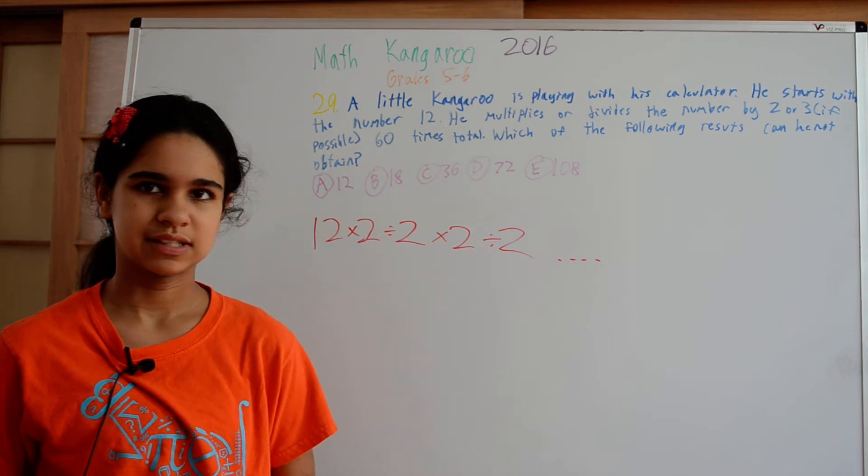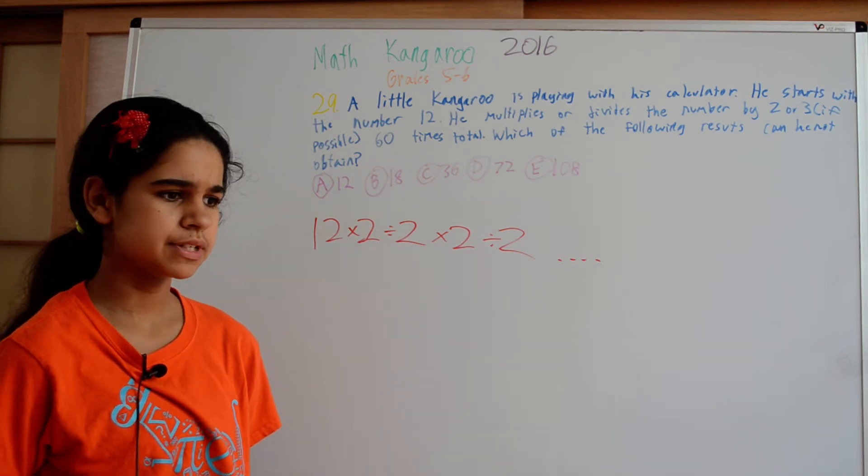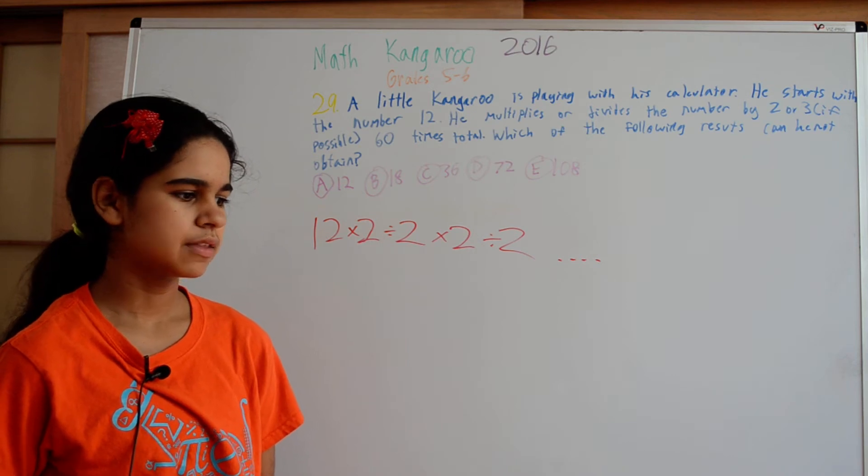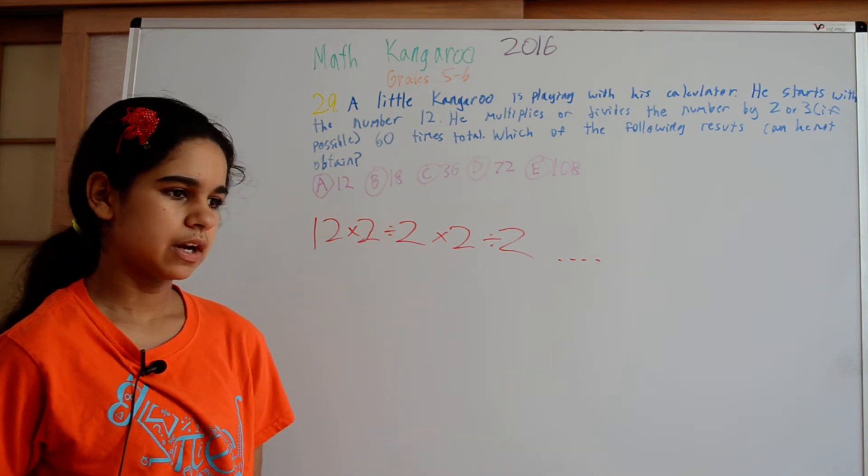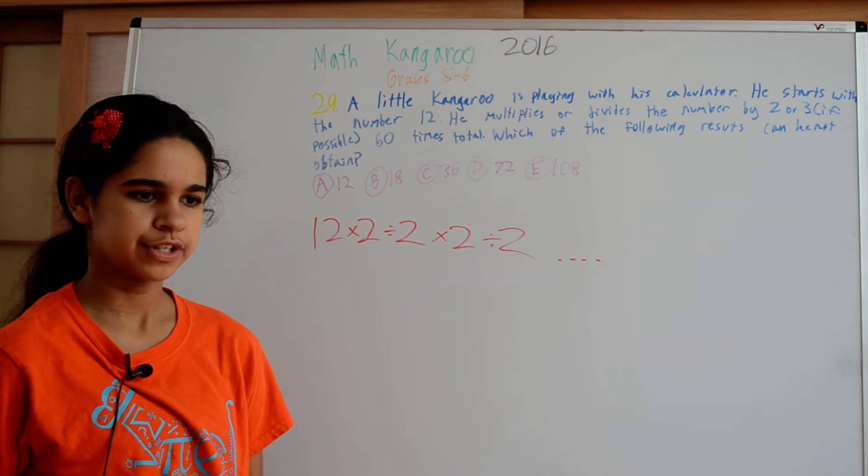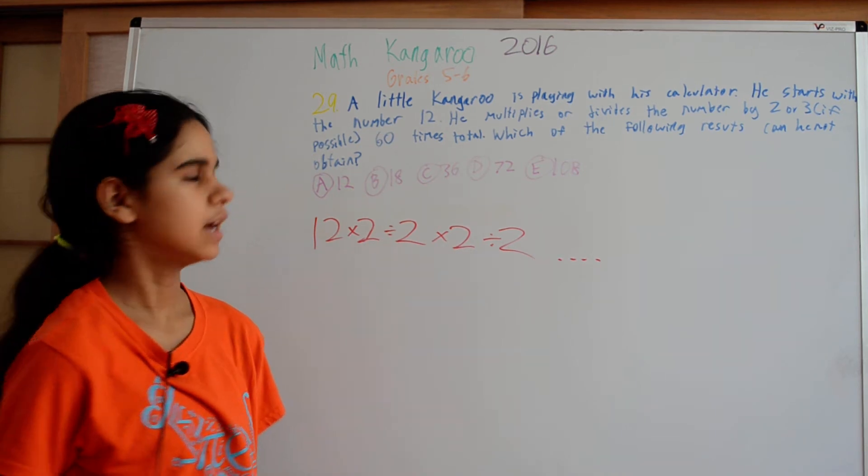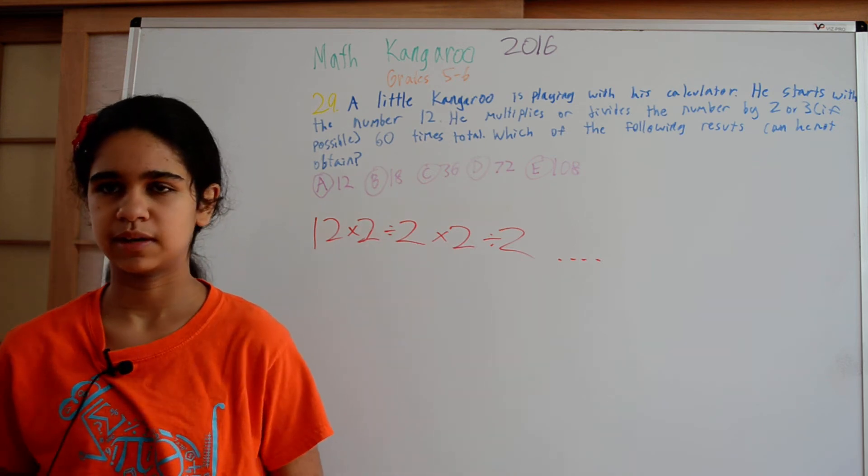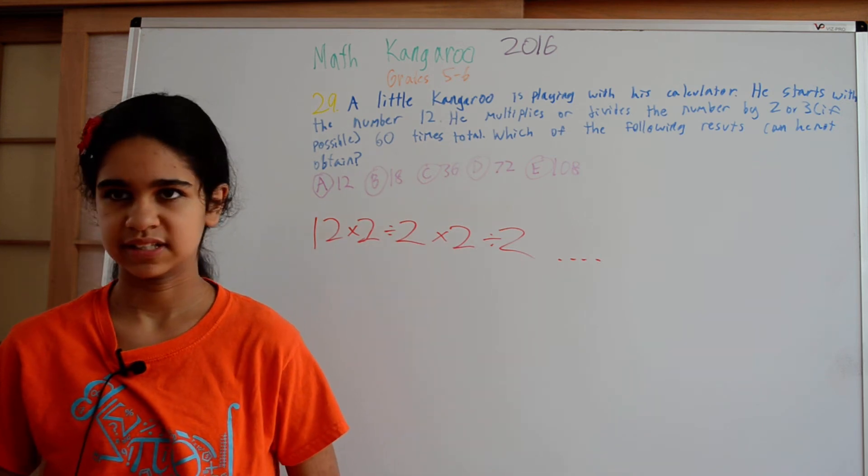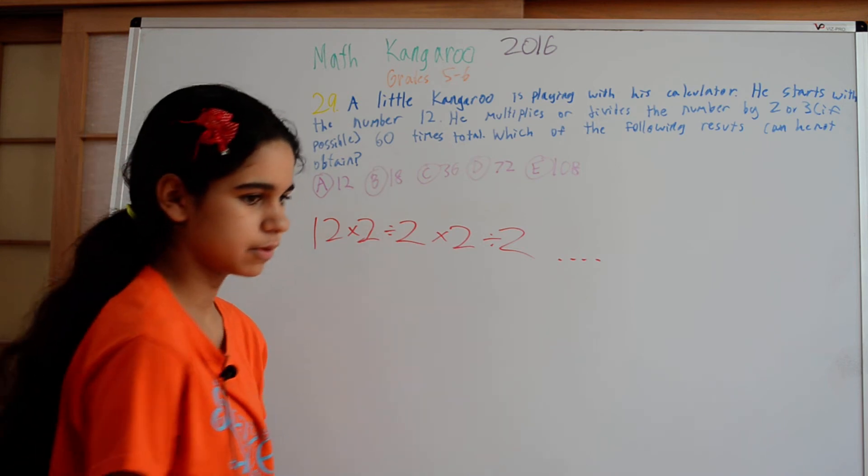And if it's an odd number that it takes to get to that particular number, well, then we can't do that because there would be an odd number left to make sure we get back to the same number. And just by multiplying by 2 or dividing by 2 and multiplying by 3 and dividing by 3, we can't get back to the same number with an odd number of moves.